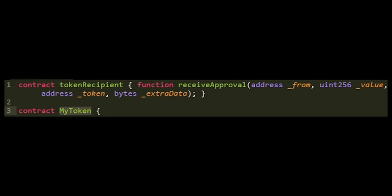When we see no inheritance, we need to ask ourselves why two contracts are defined. The most probable conclusion is that within myToken, we should expect some sort of a function that will interact with the tokenRecipient contract. We can safely assume those contracts will interact with each other using functions, and we will see that interaction later in this lesson.